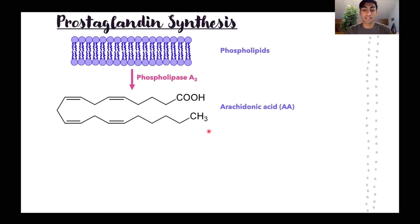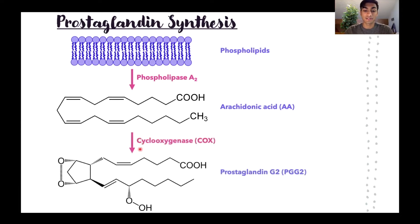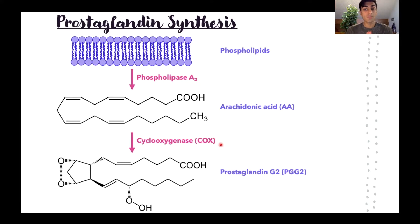From arachidonic acid, an enzyme called cyclooxygenase, or COX, will produce the first prostaglandin, prostaglandin G2, or PGG2. There are different versions of the COX enzyme — we'll talk about that in a minute. COX is actually the colloquial name we give to the enzyme more formally referred to as prostaglandin endoperoxide synthase.